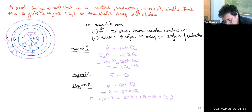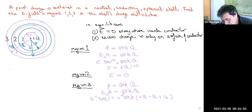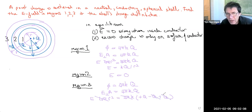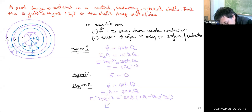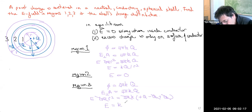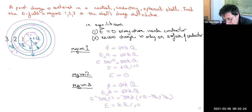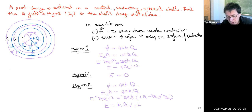Looking at the equation, the 4π's cancel out, and the plus Q and minus Q on the inner and outer surfaces of the shell cancel each other. Rearranging for the electrical field, we find that the field outside the shell in region three is also given by E = kQ/r².